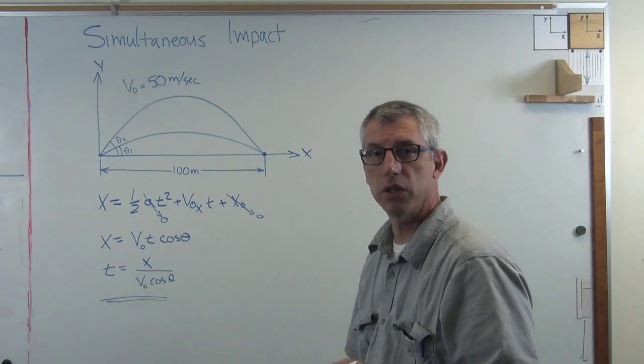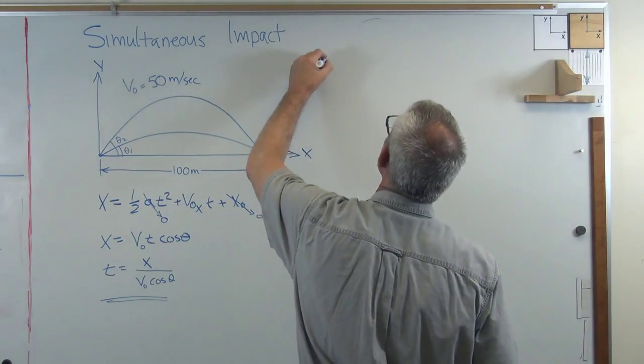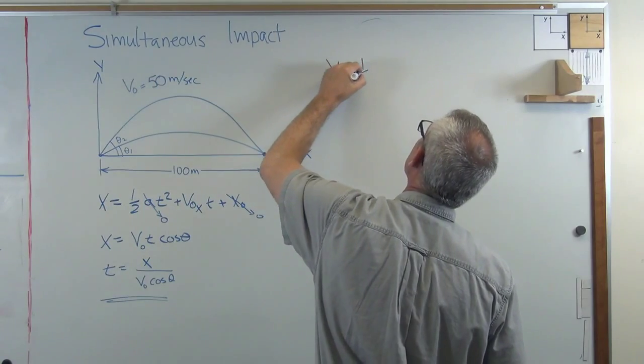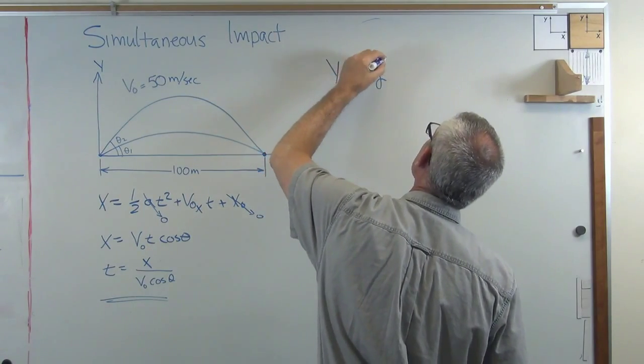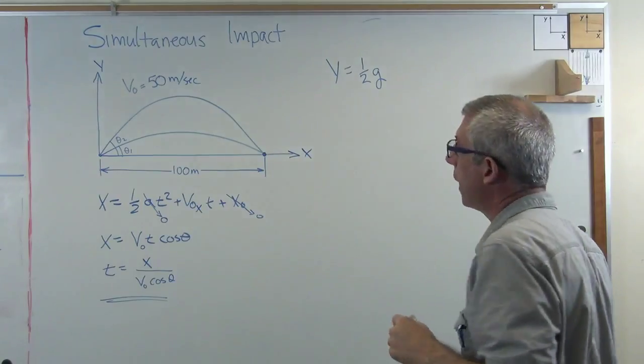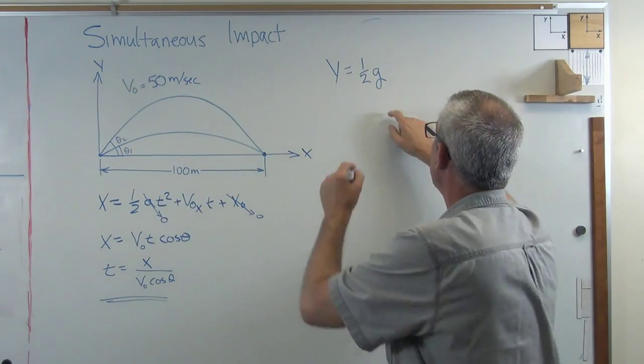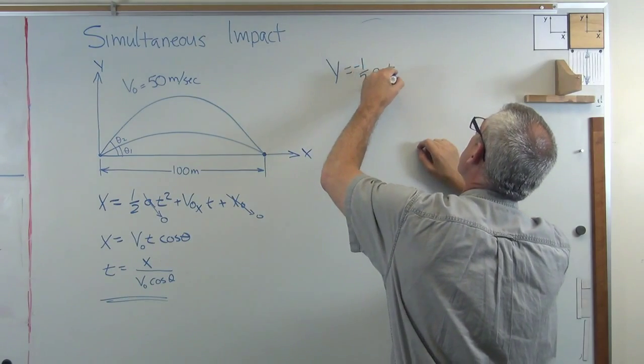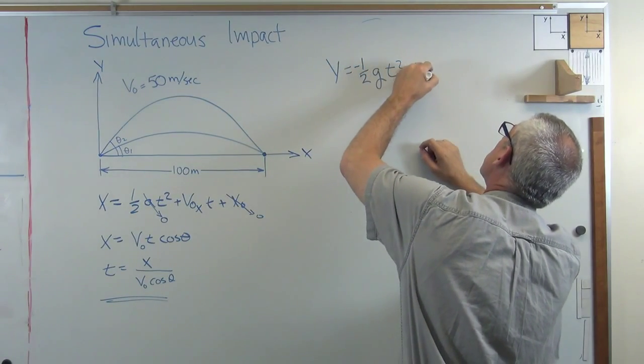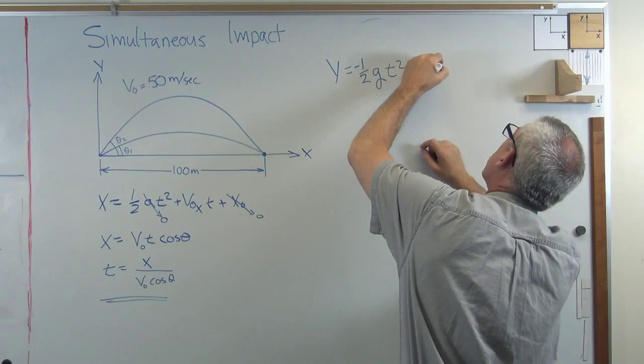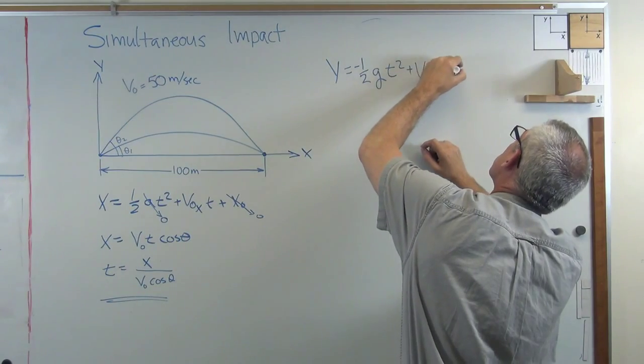Well, I need motion in the y direction as well. So let's write down that same equation. Okay, now the acceleration in gravity is g. Now I've got y positive going up. G is going to point down so I'm going to put a minus sign there. So -½gt² plus v₀y times t plus y₀.